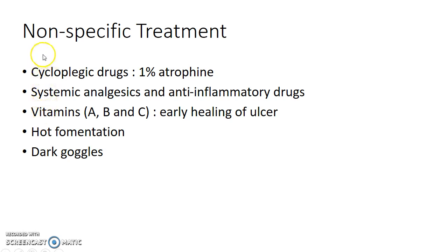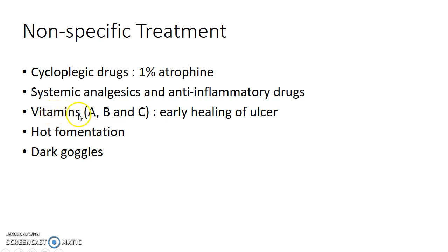Now how do you treat a case of Acanthamoeba keratitis? Non-specific treatment includes cycloplegic drugs like 1% atropine. Systemic analgesics and anti-inflammatory drugs such as paracetamol can be given. Vitamin supplementation like vitamin A, B complex, and C can be given for early healing of the ulcer. Hot fomentation can be done and dark goggles can be prescribed to the patient.